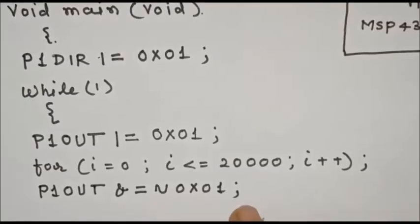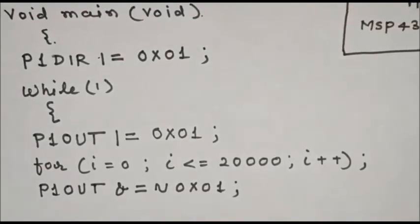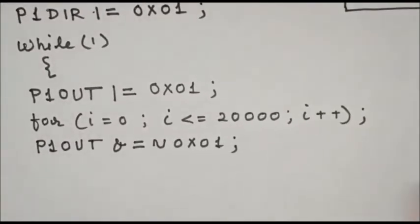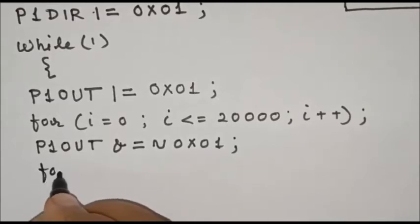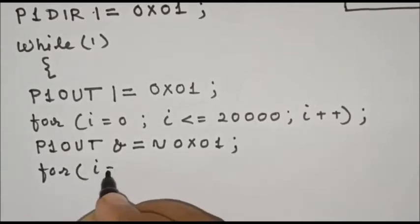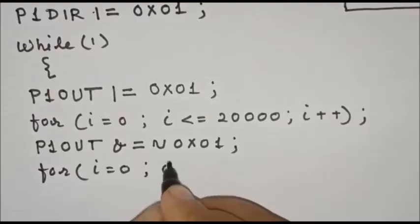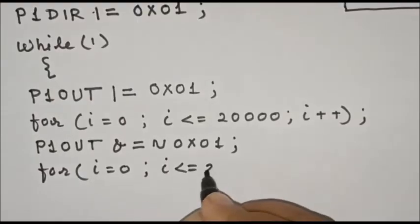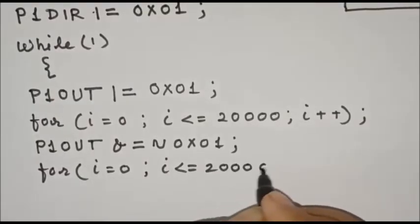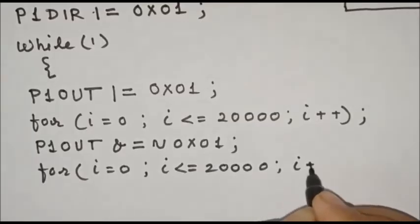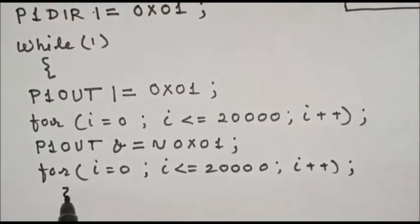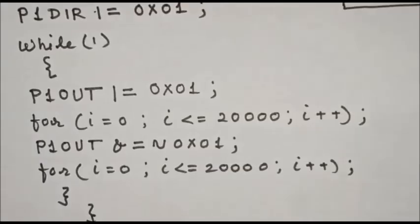We'll call the same delay. Same delay count we'll use: for i equals 0, i is less than or equal to 20,000, i plus plus. And we'll execute this loop continuously. So close this while loop and close main program.